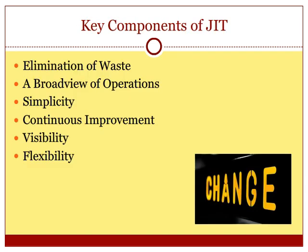Let's talk about the key components of JIT. The first is elimination of waste. Waste adds unnecessary cost to a business. Types of waste are time, energy, space, or any activity that does not add value to the product. Examples would be a production line waiting on parts, a material handler moving the same parts numerous times, and a person walking across the plant to find a container or tool — all wasted time and wasted motion.